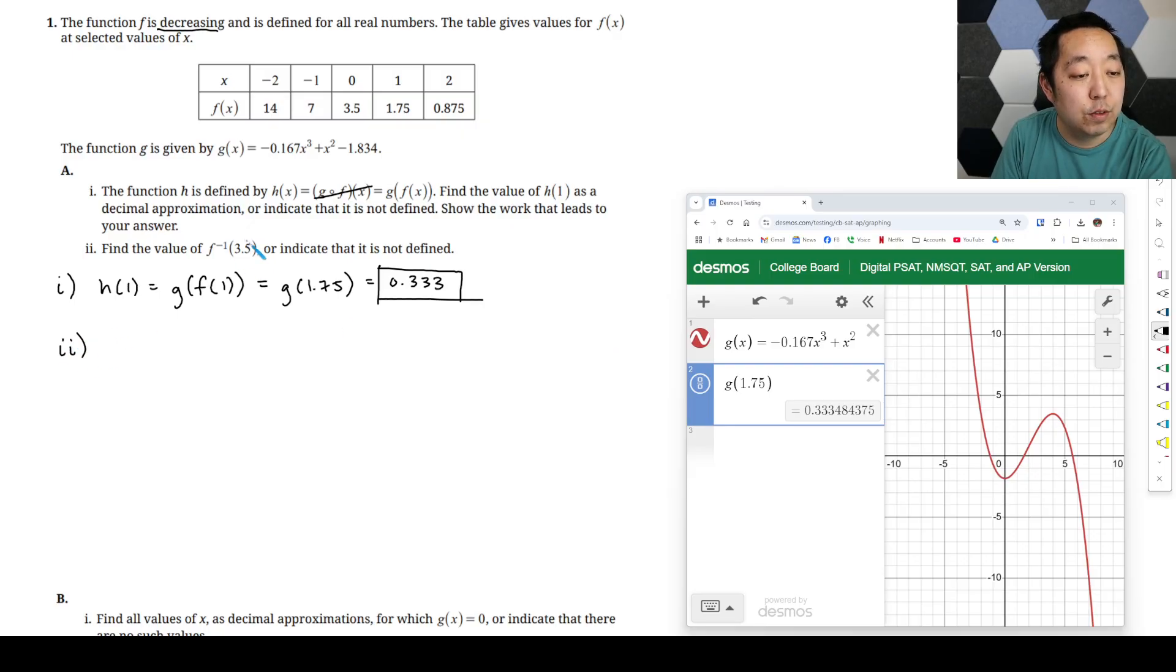Find the value of f inverse of 3.5. So remember, for inverses, we're swapping the x and y values. So we know by this notation, f of 0, for example, equals 3.5. And so therefore, you swap the x and the y, that means 0 is f inverse of 3.5. So 0 would be our answer here.